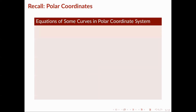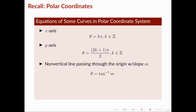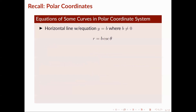Here are the equations of some curves in the polar coordinate system. For the x-axis, we have theta = k·pi, where k is an integer. For the y-axis, we have theta = (2k+1)·pi/2, where k is an integer. For a non-vertical line through the origin with slope m, we have theta = arctan(m). For a vertical line x = a (a non-zero), we have r = a·sec(theta). For a horizontal line y = b (b non-zero), we have r = b·csc(theta). For a circle centered at the origin with radius k, we have r = k or r = -k.